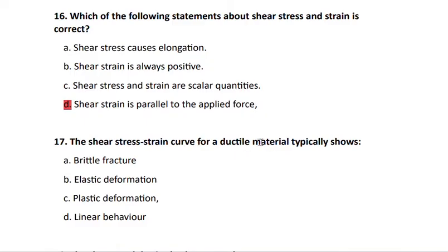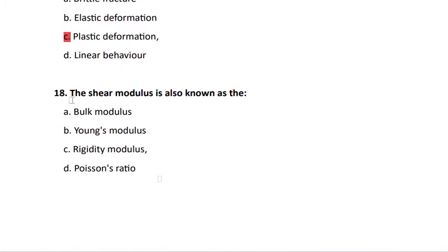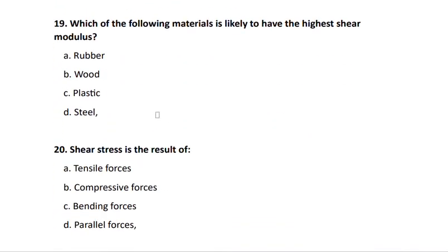Question 18: the shear modulus is also known as the rigidity modulus (answer C). Question 19: which material is likely to have the highest shear modulus? The answer is steel — steel has the highest shear modulus.